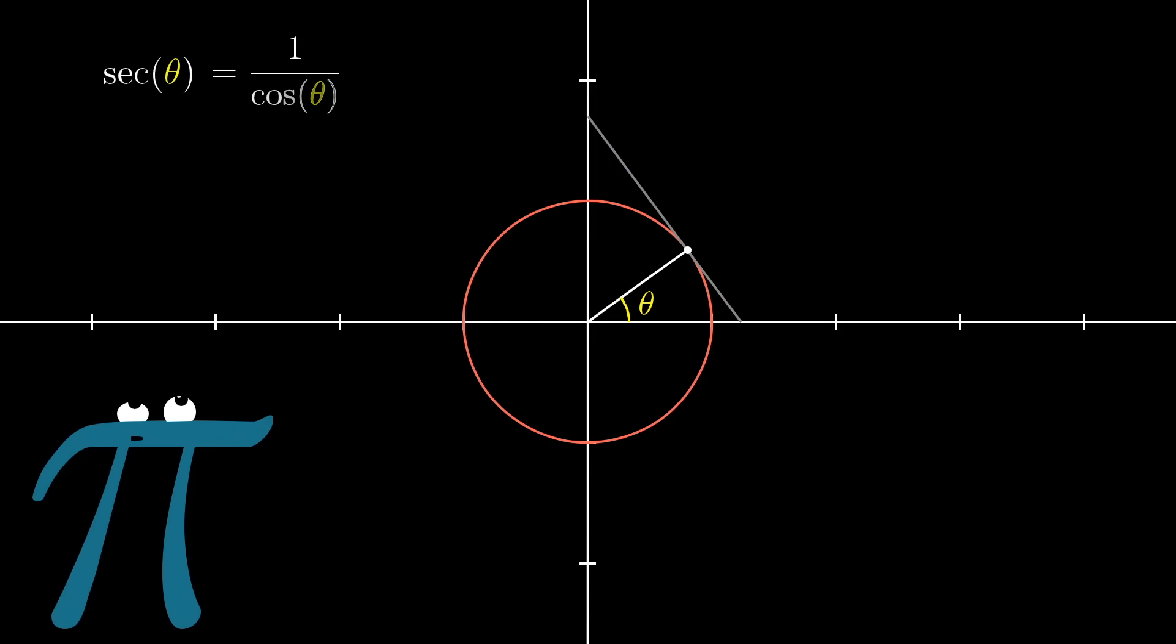Likewise, secant, which is defined as 1 divided by the cosine, and cosecant, which is defined as 1 divided by the sine of theta, each have their own places on this diagram.